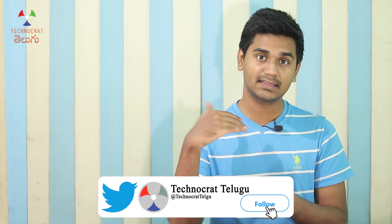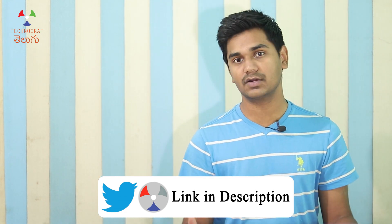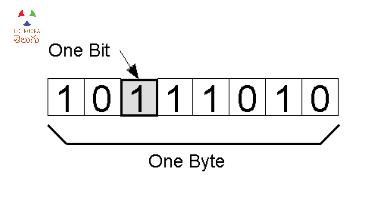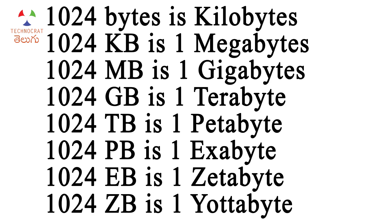Just as we measure length in meters, centimeters, and kilometers, and mass in grams and milligrams, we can measure data in bytes with prefixes. 1 byte is 8 bits. 1 kilobyte is 1024 bytes. 1 megabyte is 1024 kilobytes. 1 gigabyte is 1024 megabytes. 1 terabyte is 1024 gigabytes. 1 petabyte is 1024 terabytes. 1 exabyte is 1024 petabytes. 1 zettabyte is 1024 exabytes, and 1 yottabyte is 1024 zettabytes.